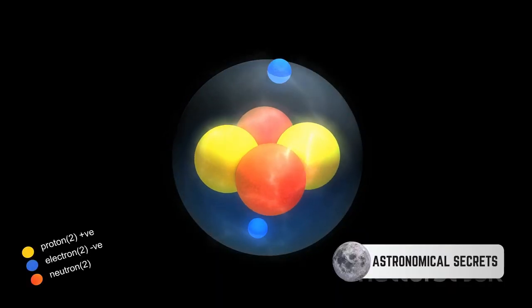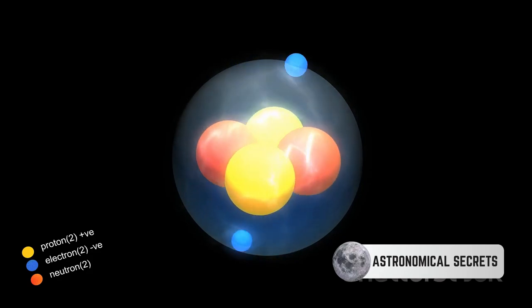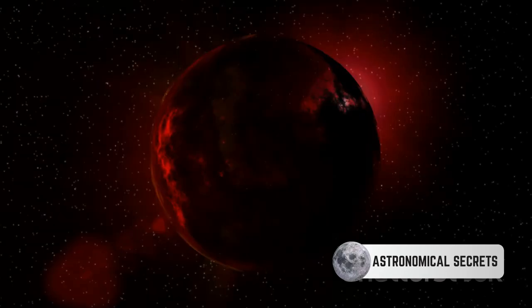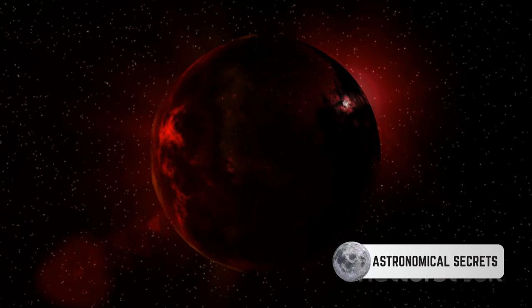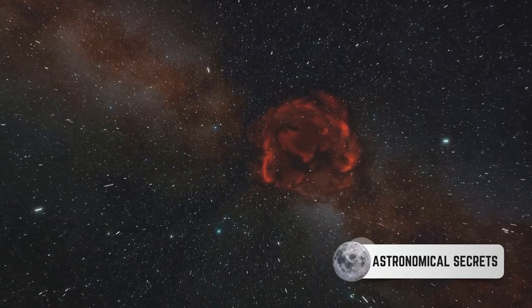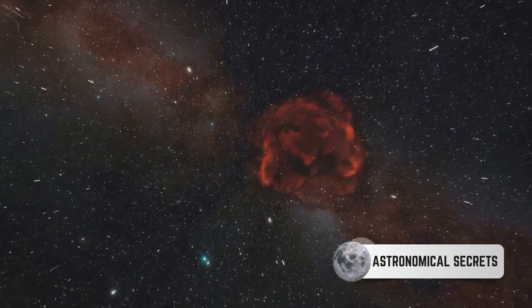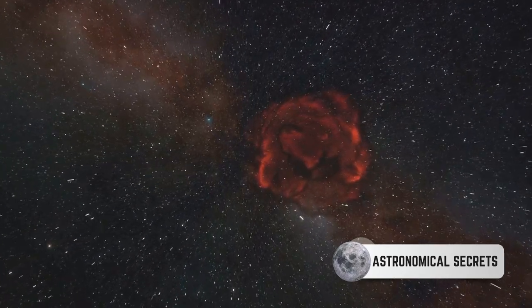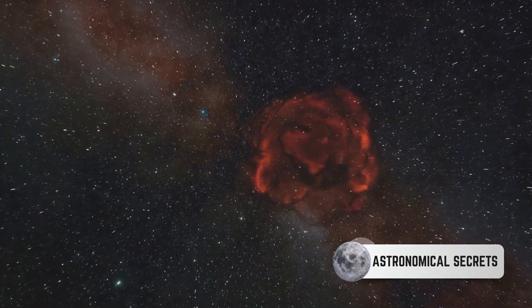The star's core contracts, and its outer layers expand, turning the star into a red giant. The core becomes hot enough to burn helium into carbon, marking the birth of a carbon star. This process, known as helium fusion or triple alpha process, is what gives carbon stars their distinct reddish appearance.